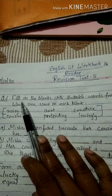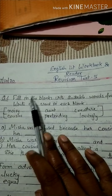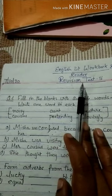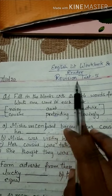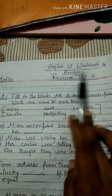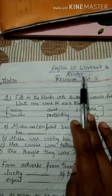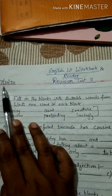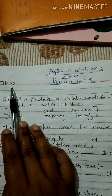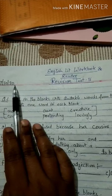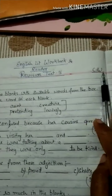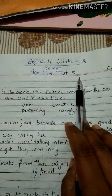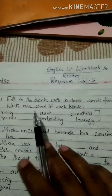Students, as you all know, yesterday we completed the revision of the English literature course book. Today we are going to do the revision of the English literature workbook and reader. You have to mention today's date on your test paper: 7/10/20, and on the right side write 'Class Work'. This is your Revision Test 5.